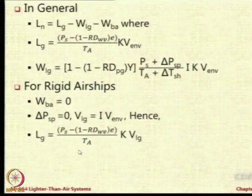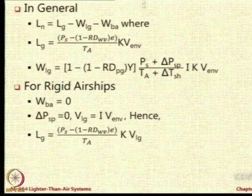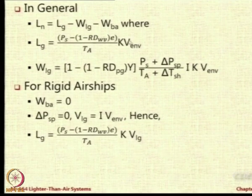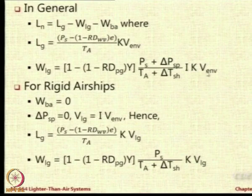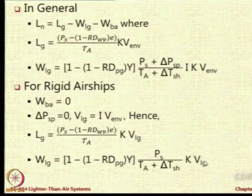The PSP terms will go to 0. Similarly, volume of the lifting gas will be equal to the infraction fraction i times V_ENV, where i is basically the summation of i_n times V_n upon V_ENV - that is the volume of the lifting gas. Put this in the expression and instead of using V_ENV, we will use directly V_LG, the lifting gas volume, because the envelope is not containing the entire gas. We also knock off the delta PSP term and replace i times V_ENV with V_LG.